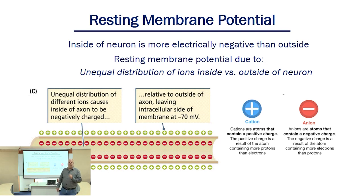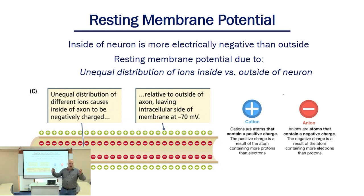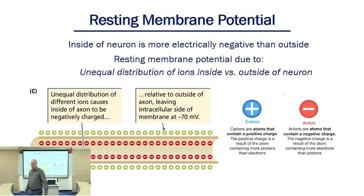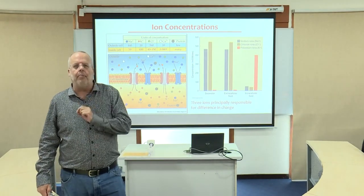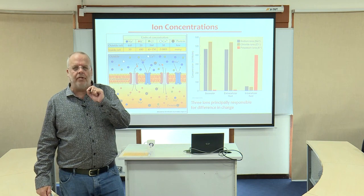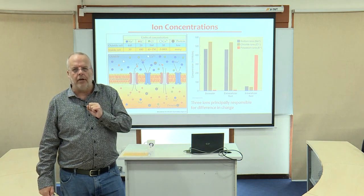An ion is just a molecule with an electrical charge. We have cations, which have a positive charge, and anions, which have a negative charge. One way that a neuron is electrically negative is that it has more negatively charged molecules or ions on its interior. When we look at these ions, there are three in particular we're going to focus on — these are largely responsible for this difference in electrical charge.